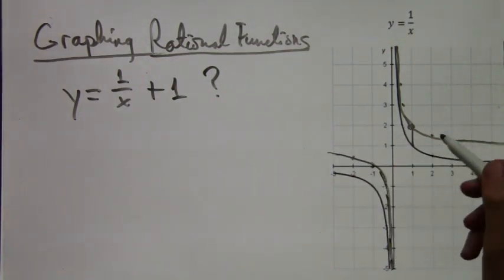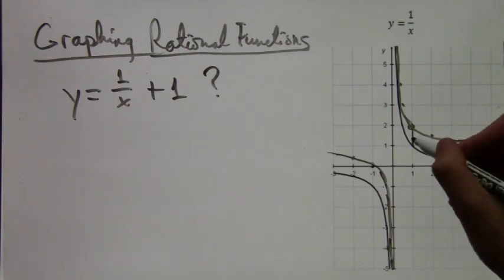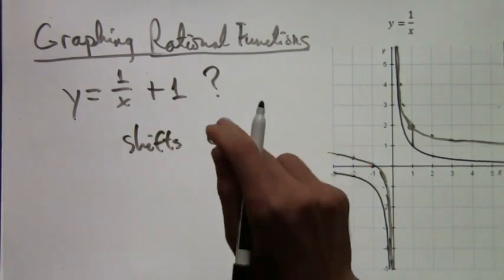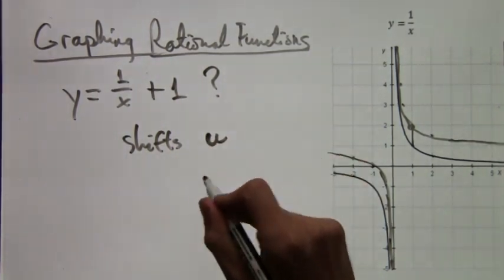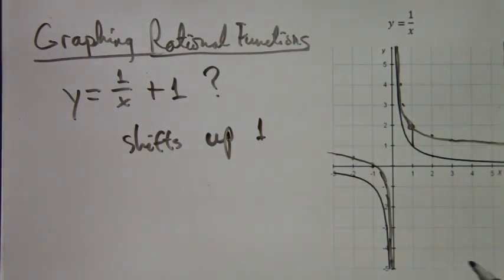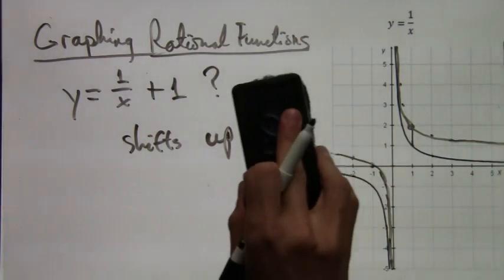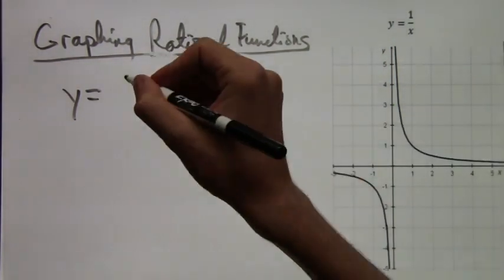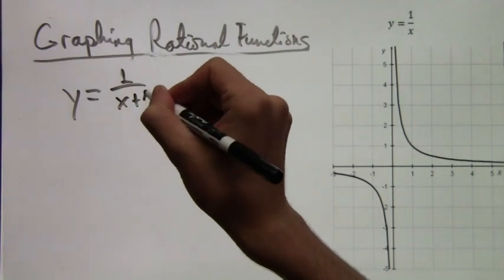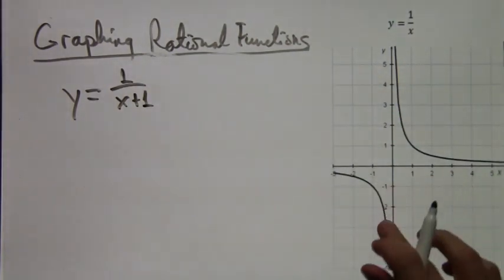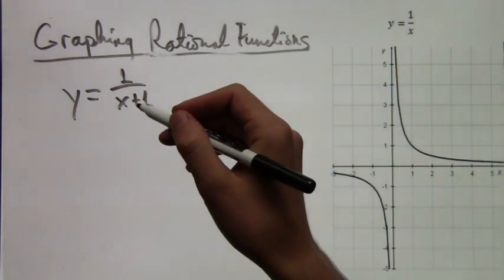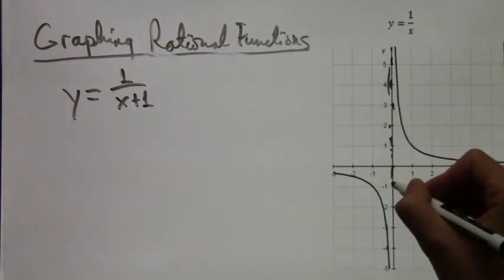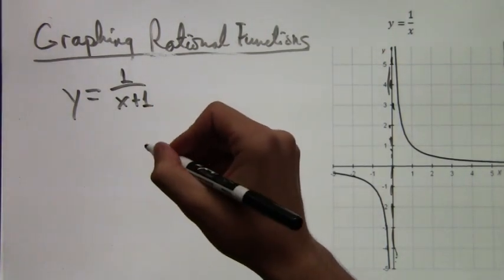And right now we're noticing that still at x equals 0, we have this crazy spike, where it goes really high or really low from one side or the other. But instead of getting closer to 0 as x increases, we're getting closer to 1. These properties are called asymptotes, by the way. This vertical spike and this horizontal shift that approaches 0, we can draw them like this. And that is what's called an asymptote.